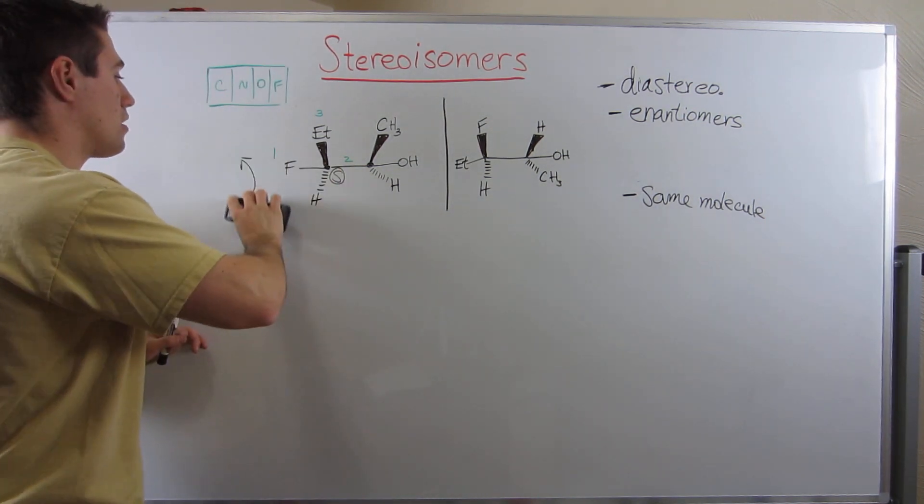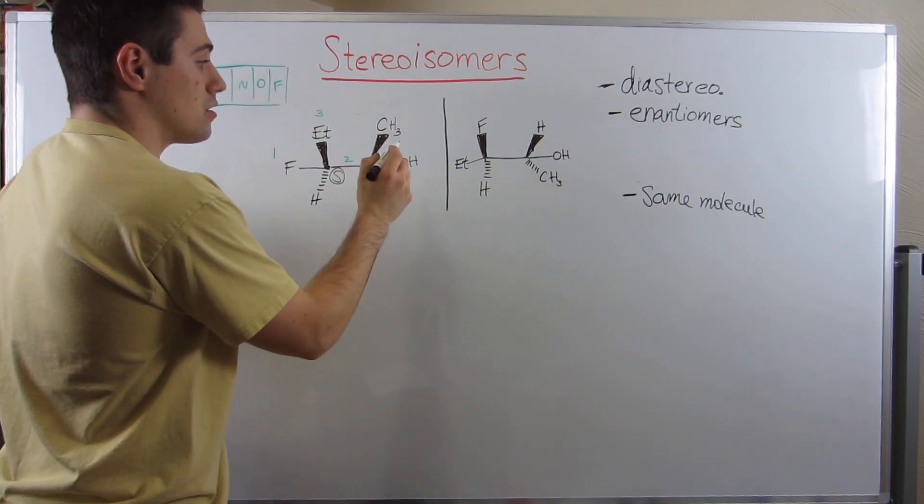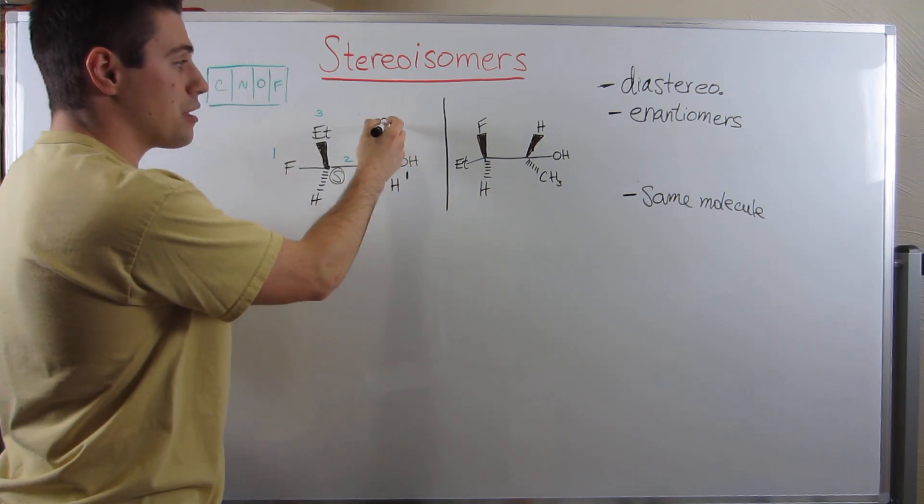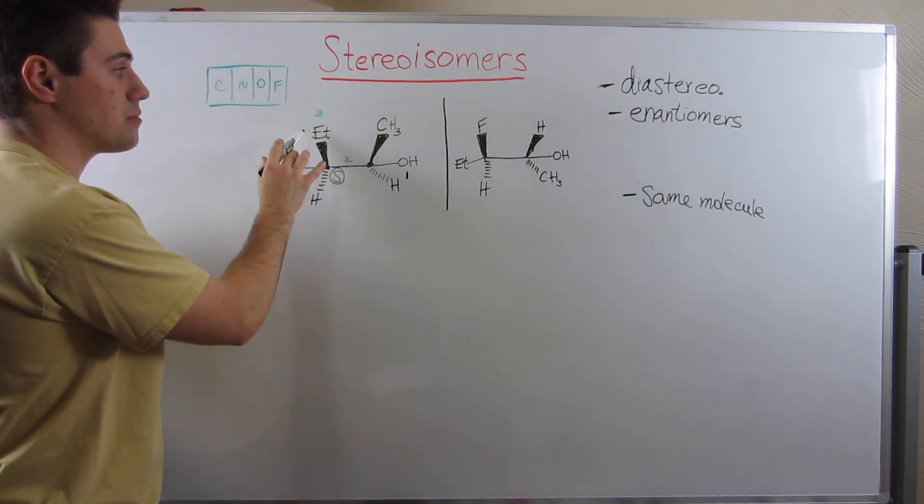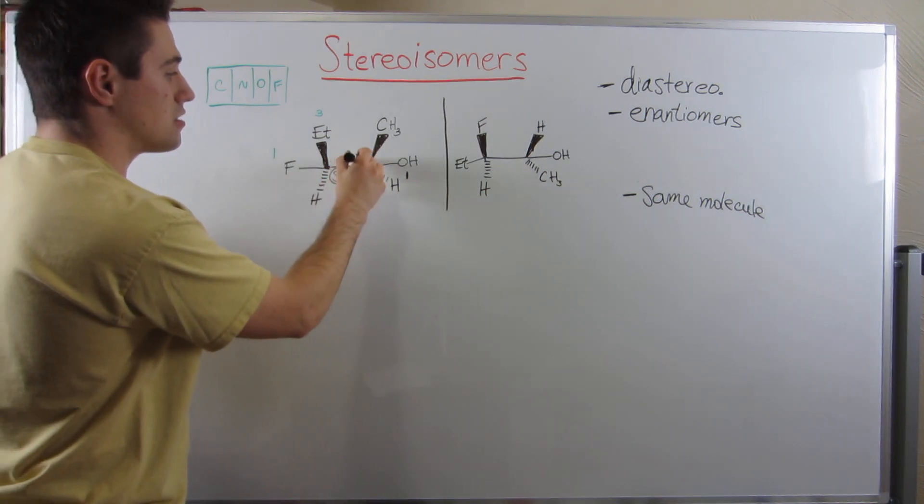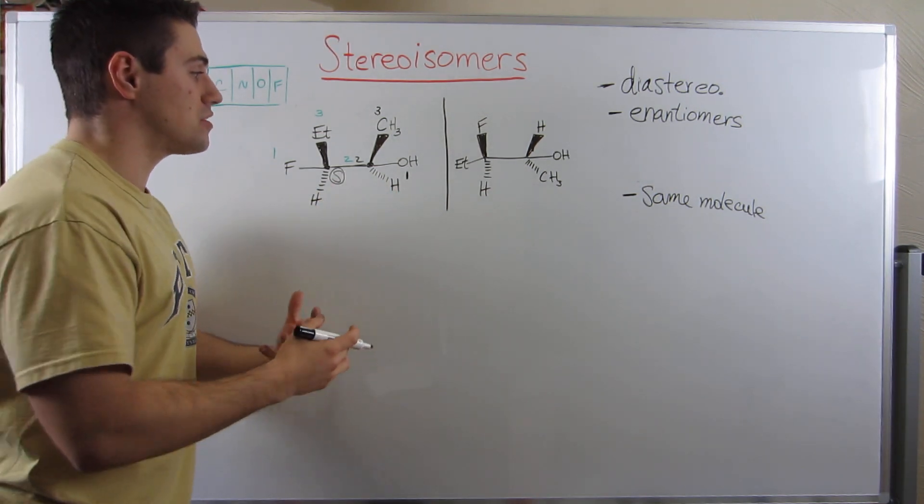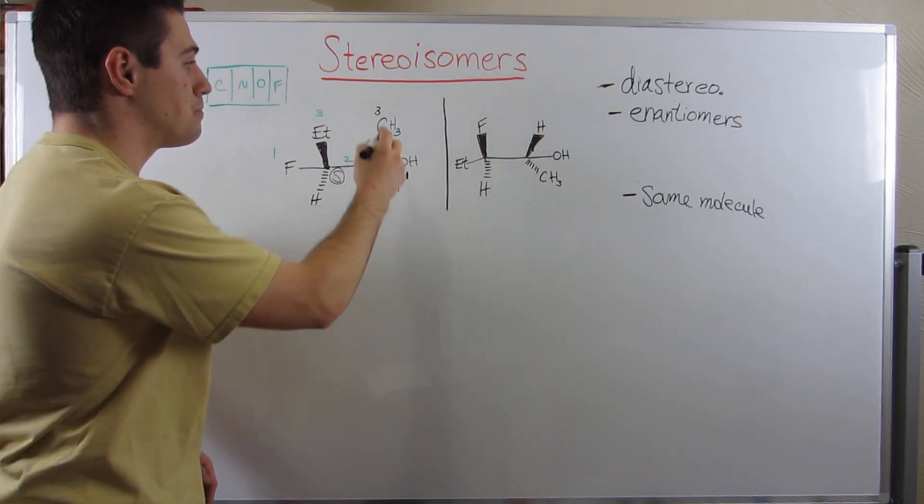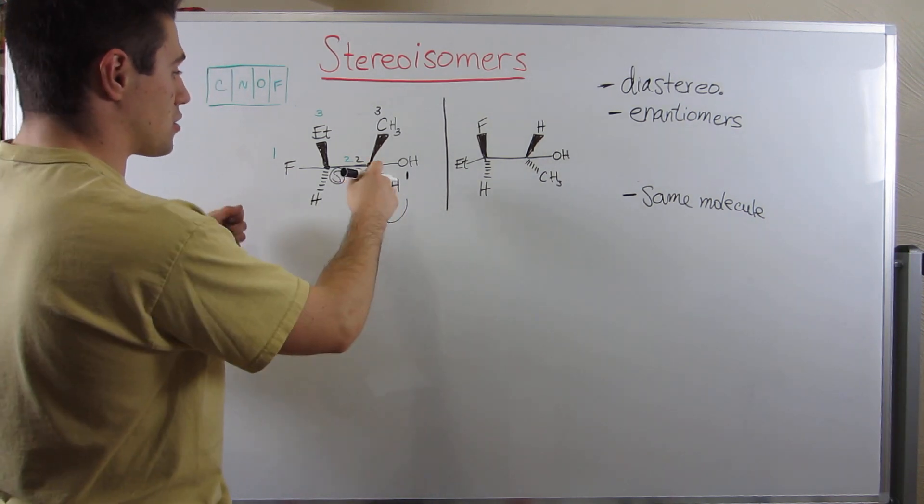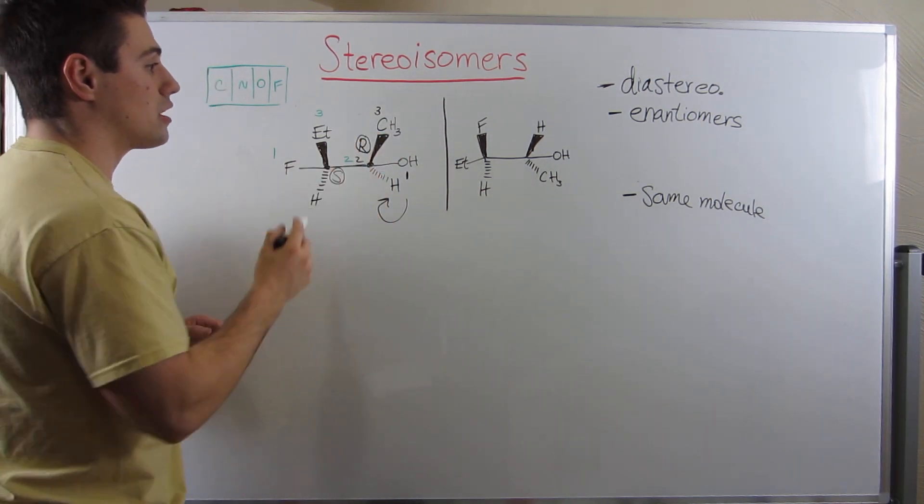Now let's do it for the next stereocenter, hopefully a little bit quicker. Oxygen right here is the highest priority group, gets a 1. This is just a methyl group. This group over here is number 2, methyl group is number 3. Lowest priority group is facing away from us, so we can straight up assign. Looks like we're going clockwise, turning the car this way, that would be R. So now we have S over here and R over here.